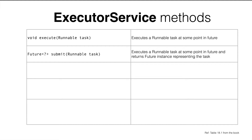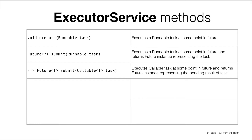The second is a submit method which takes a Runnable task and returns a Future object representing the task. Since Runnable doesn't return anything we cannot get the result back, but the Future object in this instance can be used to get more information about the task — such as sleeping for 10 seconds and then checking if the task is done, or setting a timeout to cancel if the task does not finish in that time period.